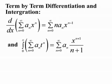Power series have a very special property: they converge absolutely within their radius of convergence. In fact, they converge uniformly — a very special type of convergence, which is a stronger version of the usual convergence of a series. Because of that, we may take term-by-term differentiation and integration of power series.